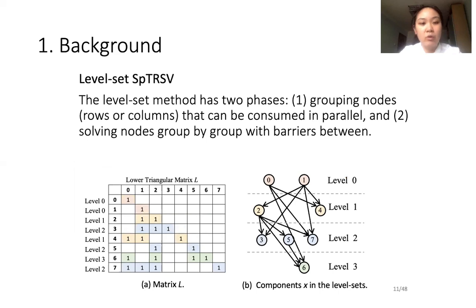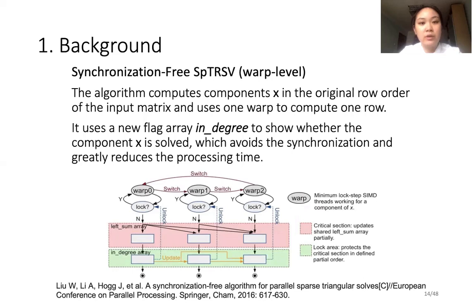Next, let's review the current sparse triangular solve algorithms. I will show the level set algorithm in this slide. The level set method has two phases. The first is grouping nodes according to their rows or columns that can be consumed in parallel. The second is solving nodes group by group with barriers between. This is the warp-level synchronization-free sparse triangular solve proposed by Liu and others in 2016. The algorithm computes component X in the original row order of the input matrix and uses one warp to compute one row. It adds a new flag array in_degree to show whether the component X is solved, which avoids the synchronization and greatly reduces the processing time.